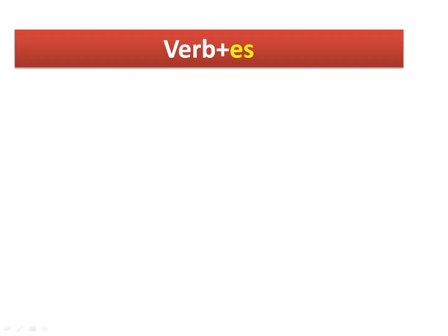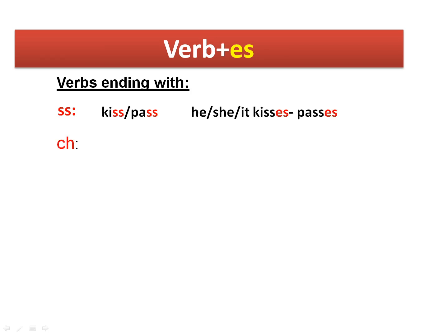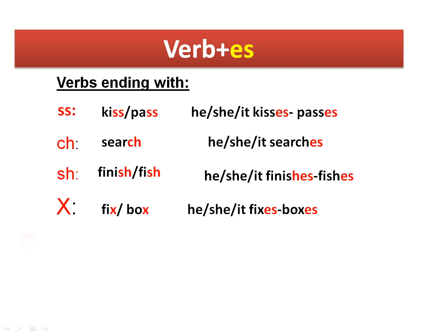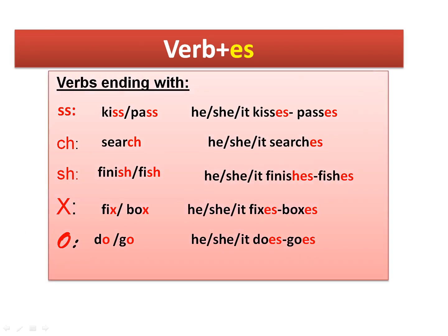So sometimes we add 'es', sometimes 'ies'. Let's look at the rules. Rule number one: verb plus 'es'. We add 'es' for verbs ending in double 's' — for example, kiss → kisses, pass → passes. Always in the third person singular: he, she, or it. Also 'ch' — search → searches. 'Sh' — finish → finishes, fish → fishes. 'X' — fix → boxes. And 'o' — do → does, go → goes.